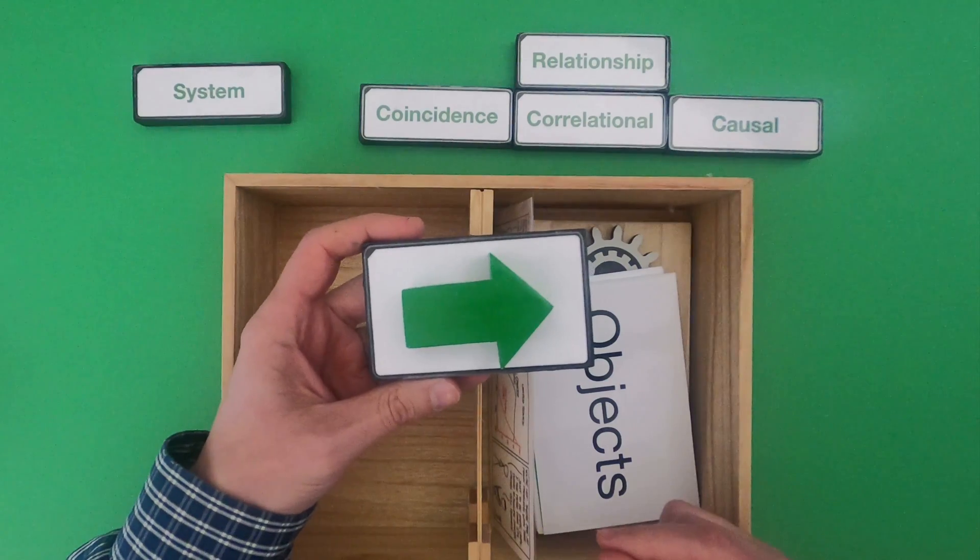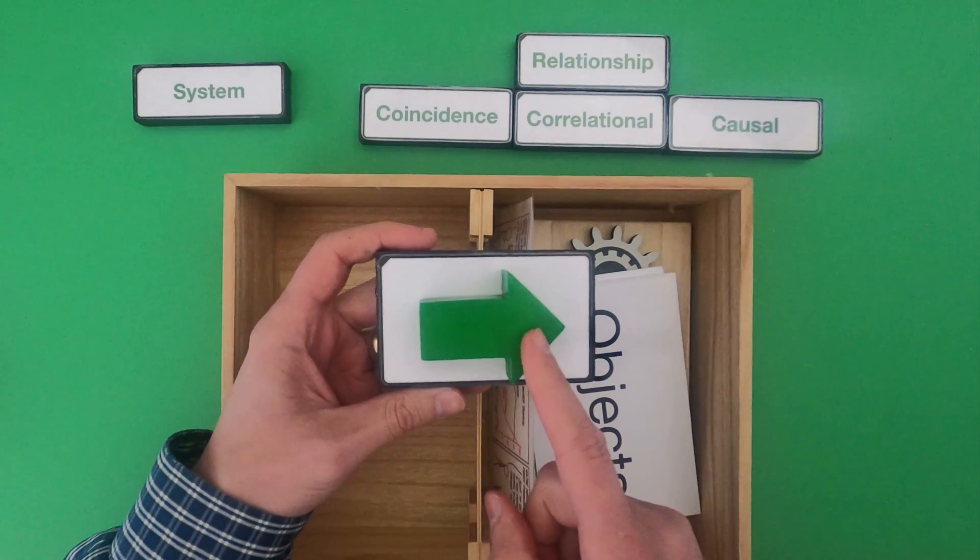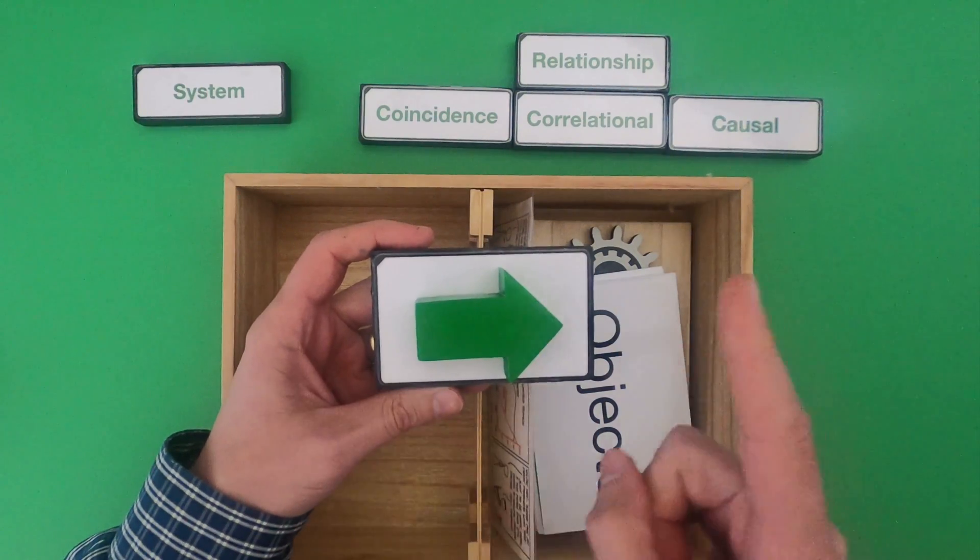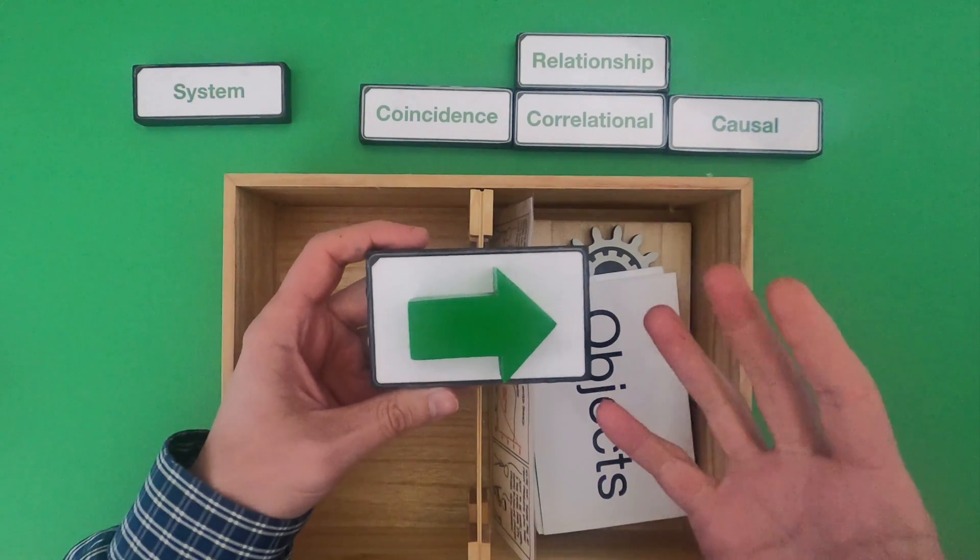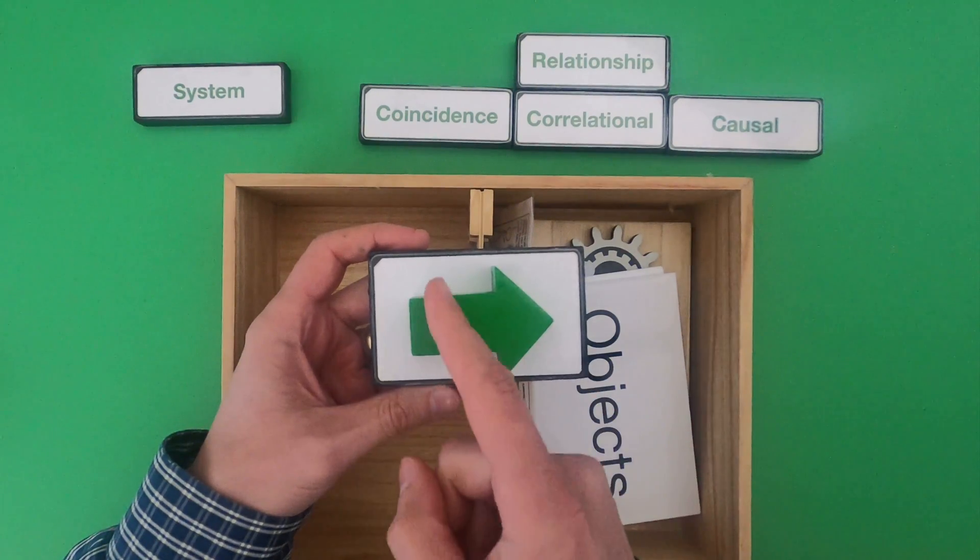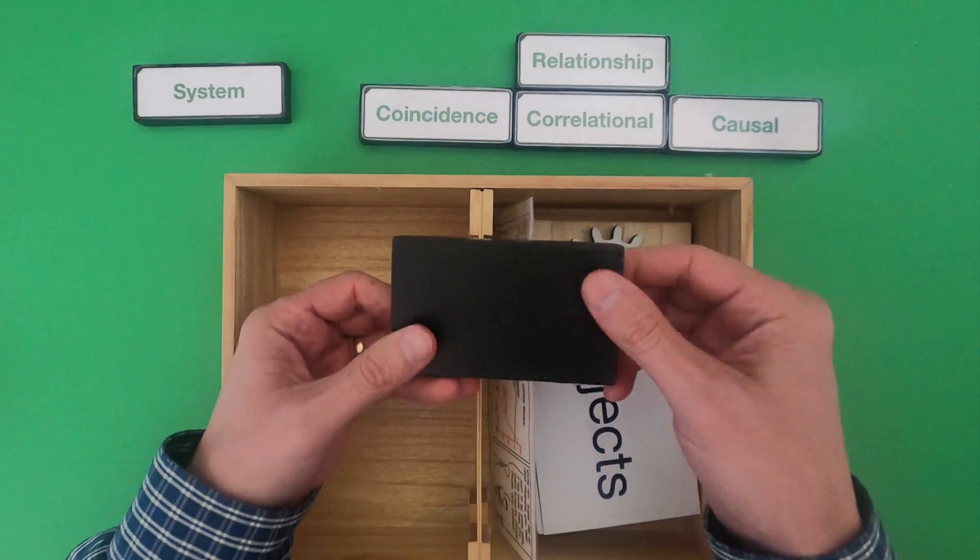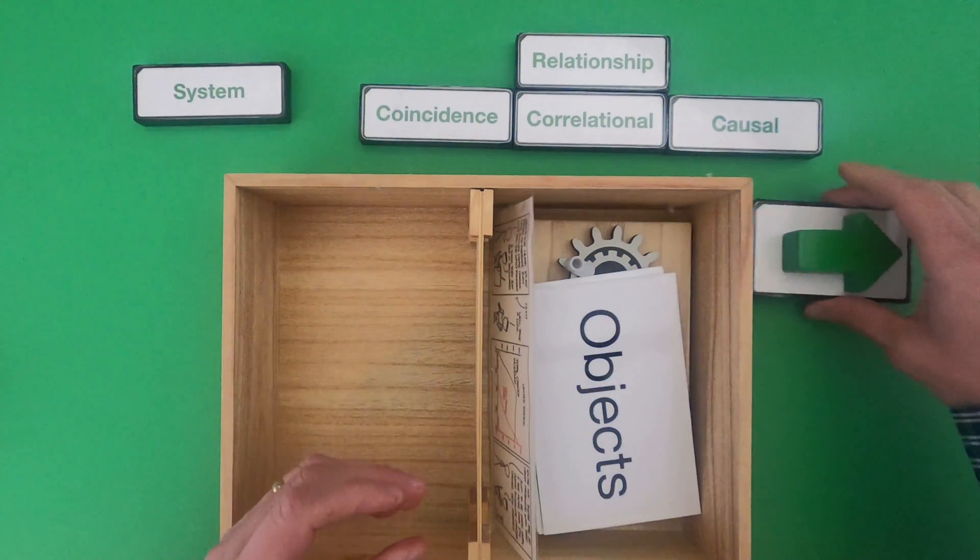The object that represents causation is going to be the green arrow because it always leads from the cause to the effect. In our modeling if we think something's correlated we'll just draw an arrow in both directions and then if it's coincidence there's going to be no arrow at all.